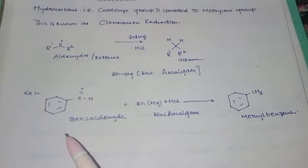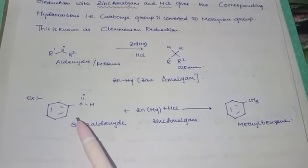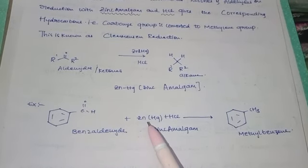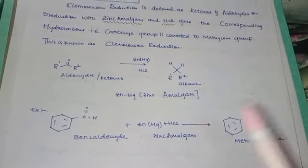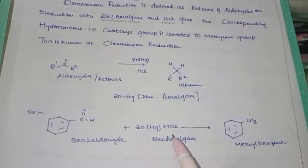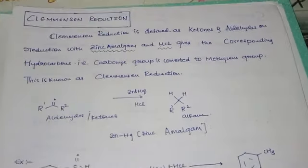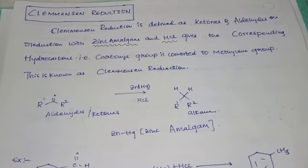For example, you can see benzaldehyde. Here it is reacting with zinc and HCl to produce methyl benzene. This is Clemmensen reduction and a most important reduction.